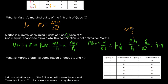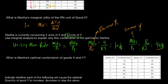Clearly, this is not an optimal combination for Martha. A rational consumer will increase consumption of the good that provides more marginal utility per dollar — in this case, good Y — and decrease consumption of the good giving less marginal utility per dollar, which is good X. Good Y gives her 4 utils per dollar compared with good X which gives her only 1 util per dollar, so the rational thing is to buy more Y and less X.